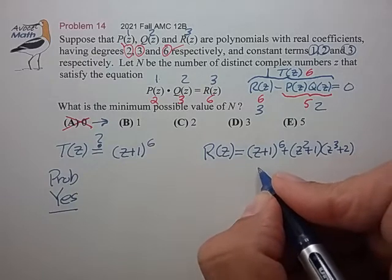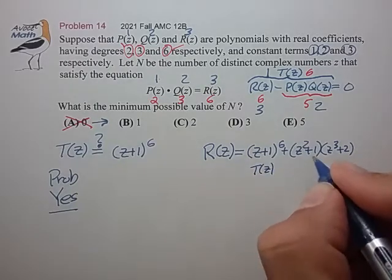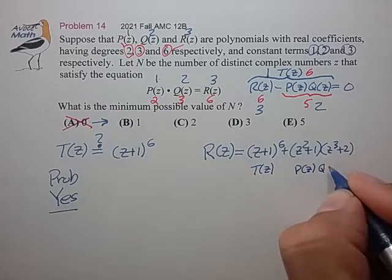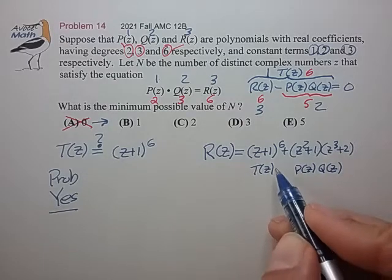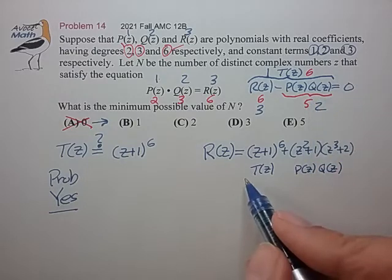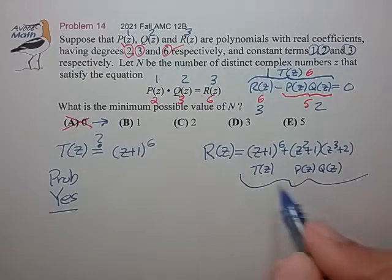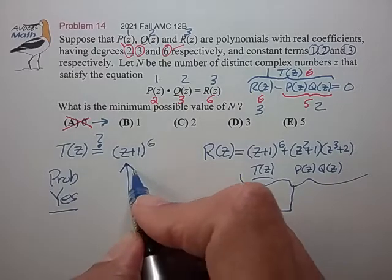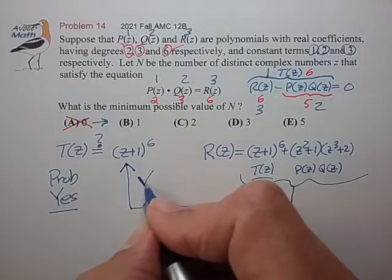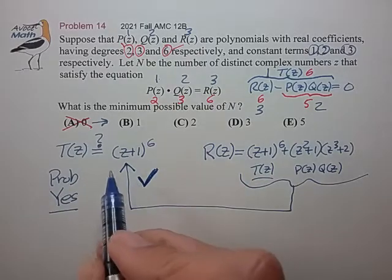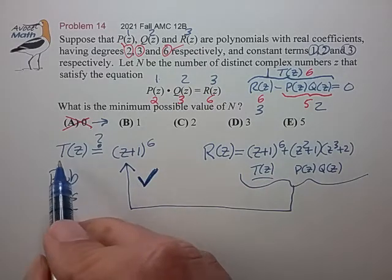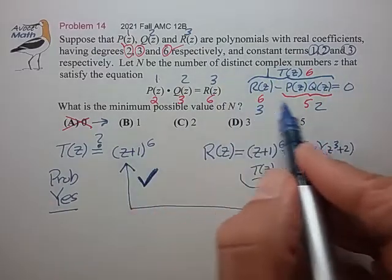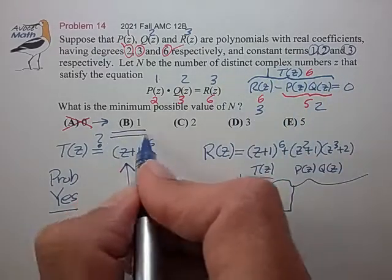So again, this is the T(z) that we're trying to form. This would be the P(z), Q(z) that we're going to subtract. And when we do that subtraction, we will in fact end up with just T(z) to form this final expression. So that's the proof in the pudding. And we can actually form T(z), which has only one distinct complex number z as a root for choice B.